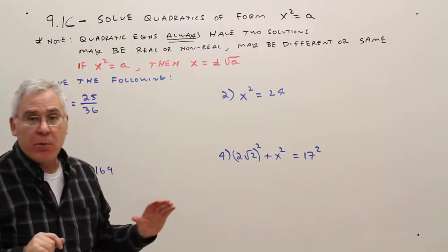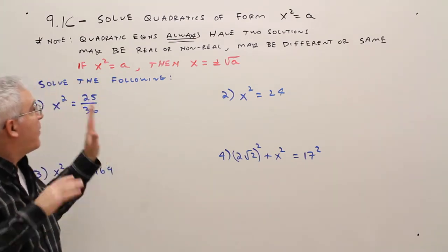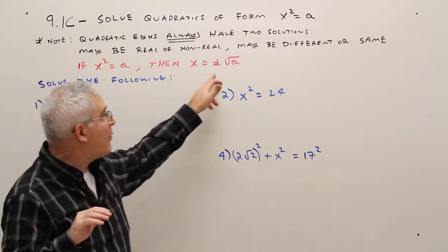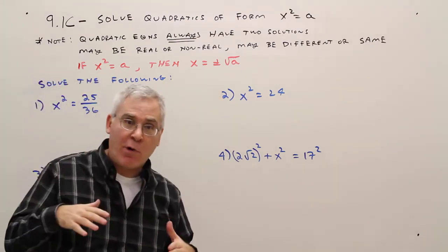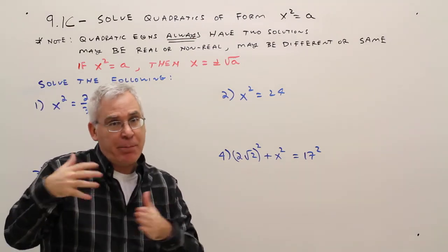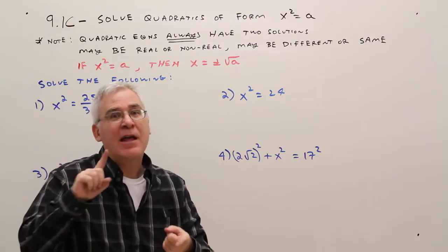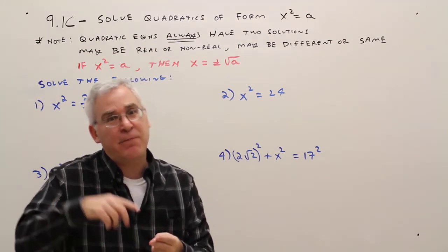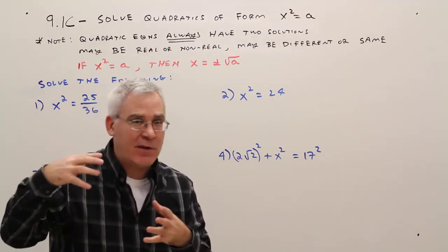Whenever X squared equals a number, the solutions are always X equals plus or minus the square root of that number. That plus or minus stems from a negative times a negative also equaling a positive. That's kind of where it comes from.